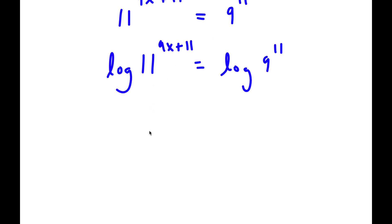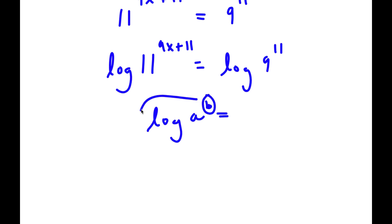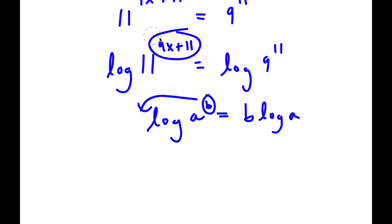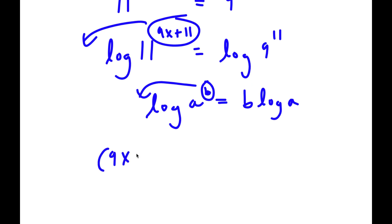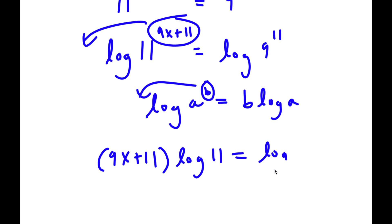Now if I have something in the form log a to the power of b, I can move the exponent b to the front so that equals b times log a. So log 11 to the power of 9x plus 11 becomes 9x plus 11 times log 11, and the right side becomes 11 times log 9.